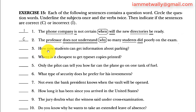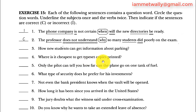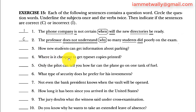It should have been: 'How can new students get information?' Sentence 4: 'Where is it cheapest to get typist copies printed?' 'Where' is the question word, 'is' is the helping verb, 'it' is the subject, and 'cheapest' is the adjective. 'Where is it cheapest' — this is correct, no problem here.